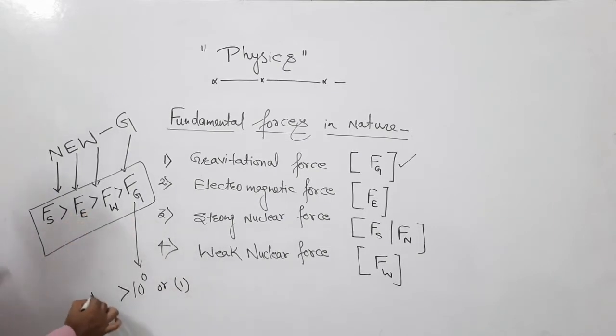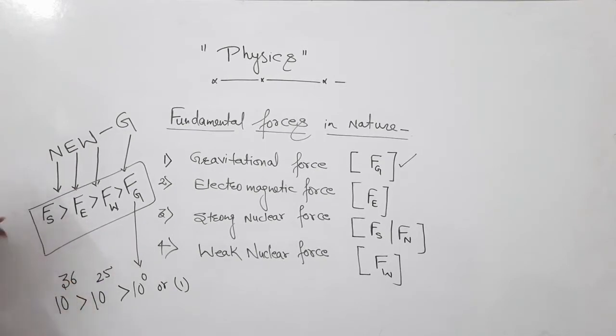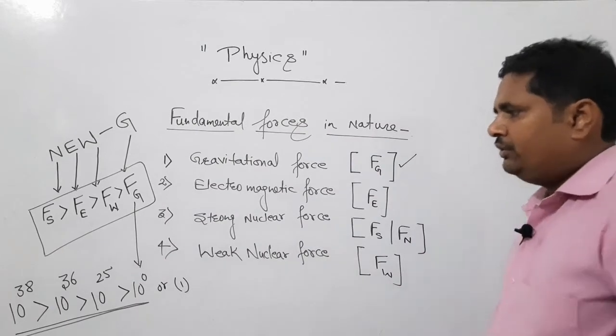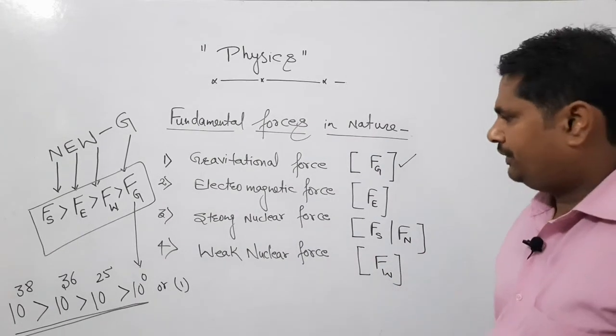Weak nuclear force is 10 raise to power 25 times stronger than gravitational force. Even stronger than that is 10 raise to power 36 - electromagnetic. And even stronger force is strong nuclear force. So this is their order.